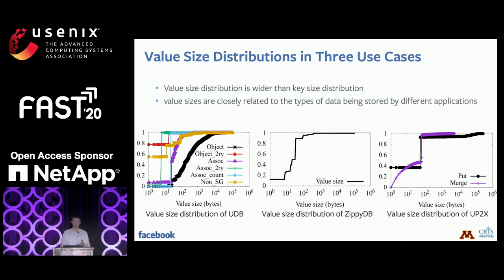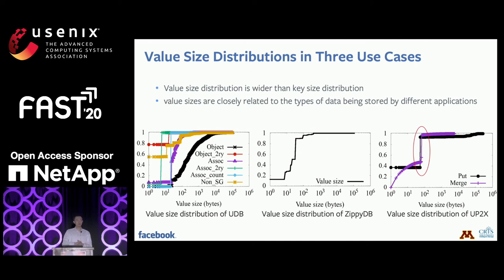The value size distribution is different — values have a long-tail distribution, especially for objects in UDB. In ZPDB, the value, usually the location of the object, is typically smaller than 50 bytes. There is a special pattern in UP2X: a high jump in the CDF indicates more than 50% of values have the same size. That's because user profile data uses a fixed data structure to store counters, fixed at 64 bytes or similar.